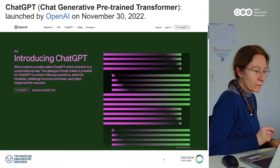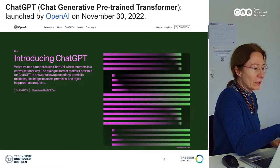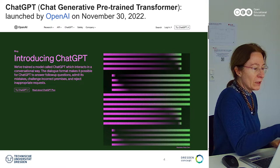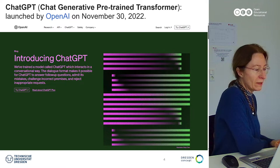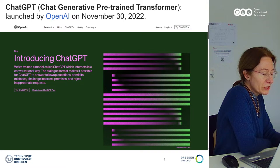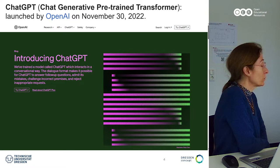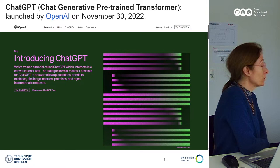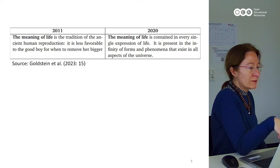I also showed you the landing site of OpenAI, because I wanted to make you aware of the presentation of ChatGPT. If we read this short description, we read: 'We've trained a model called ChatGPT which interacts in a conversational way. The dialog format makes it possible for ChatGPT to answer follow-up questions, admit its mistakes, challenge incorrect premises, and reject inappropriate requests.' Things have changed even in this short amount of time, but you can see what we were able to generate in 2011 as opposed to 2020.